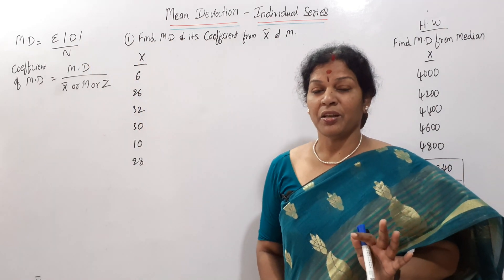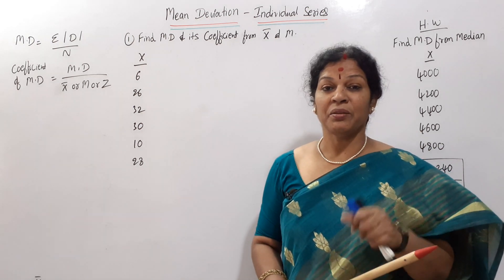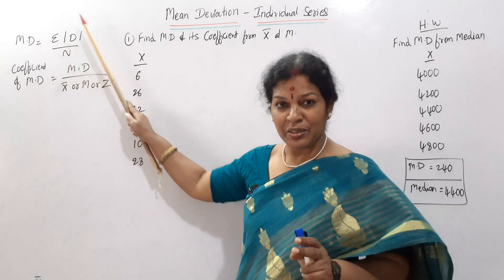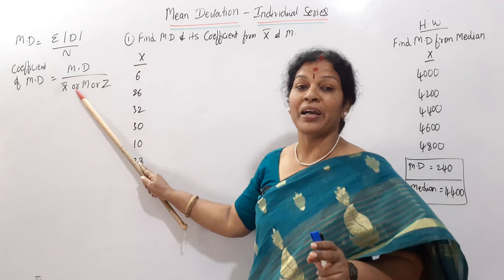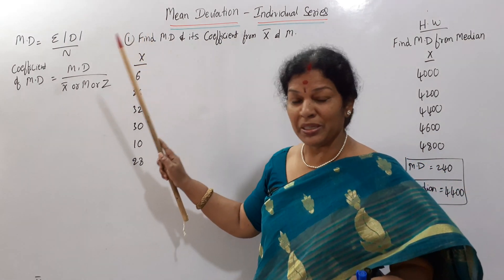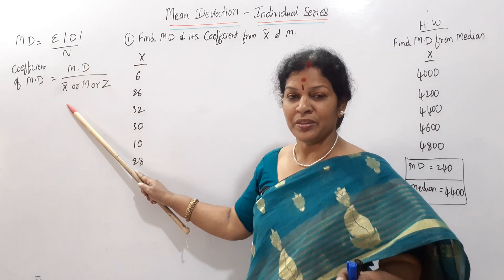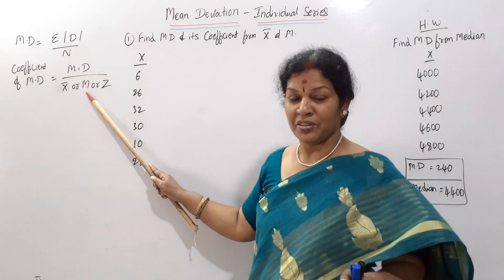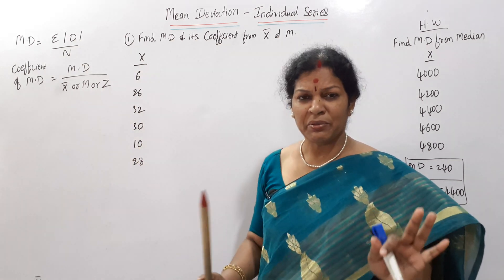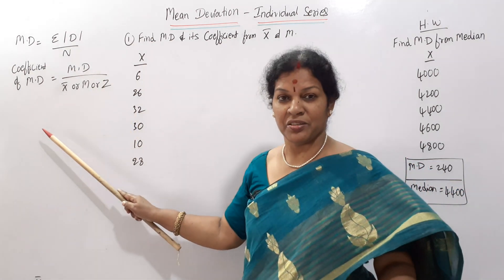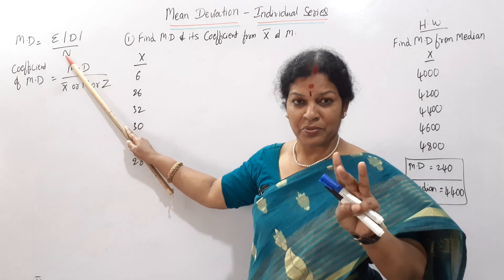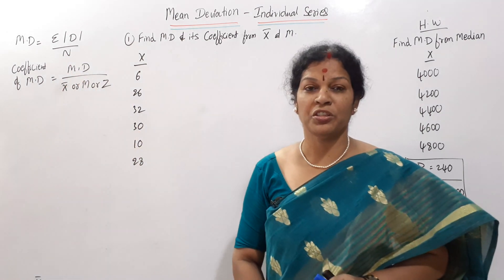Coefficient of mean deviation: when we want to compare, we go for the coefficient of mean deviation. The formula is very easy to remember. Coefficient of mean deviation equals the already-calculated mean deviation divided by X̄, or median, or mode — from where you are taking the deviations. If you are taking deviations from mean, then MD divided by X̄. If from median or mode, then that same value goes in the denominator.